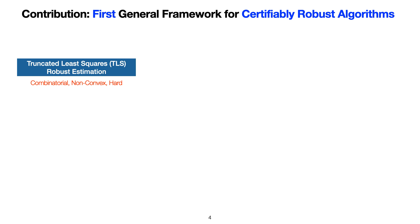Towards this goal, we propose the first general framework for designing certifiably robust algorithms. In particular, we study robust estimation using the truncated least squares estimator. We first show that a family of TLS problems can be reformulated as polynomial optimization problems, which are equally hard but exhibits special structural sparsity.